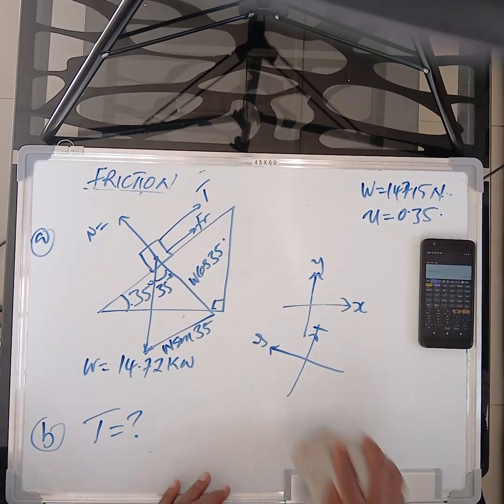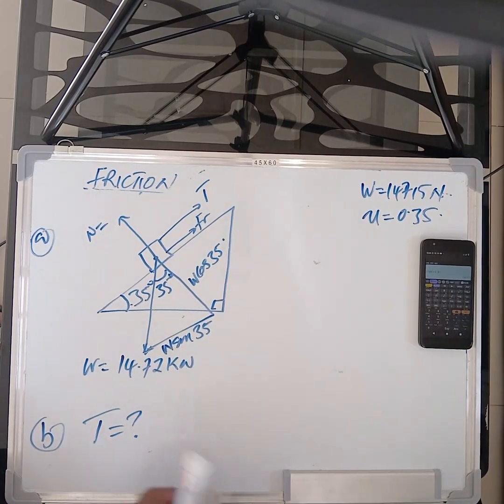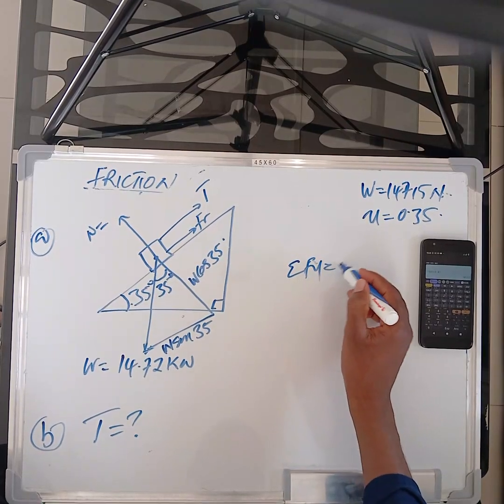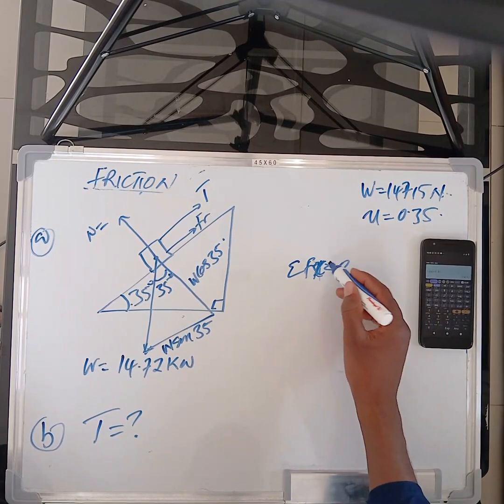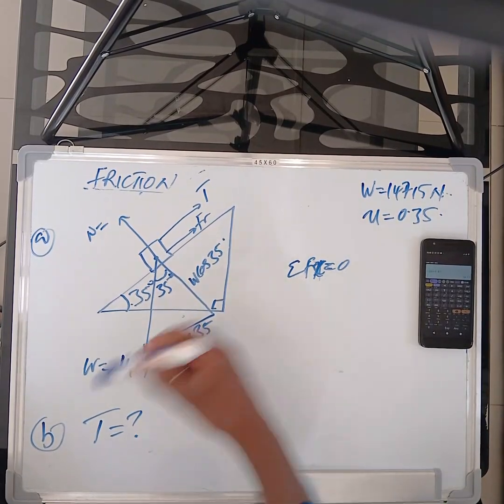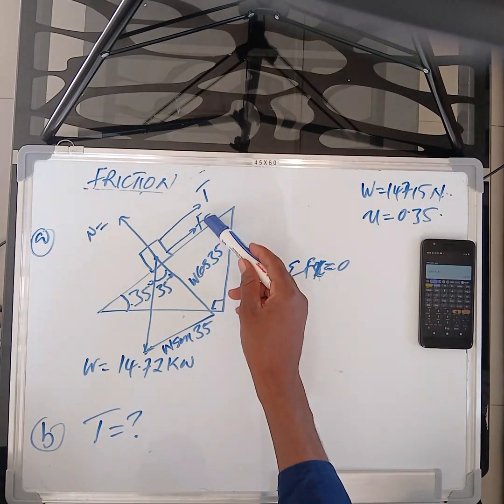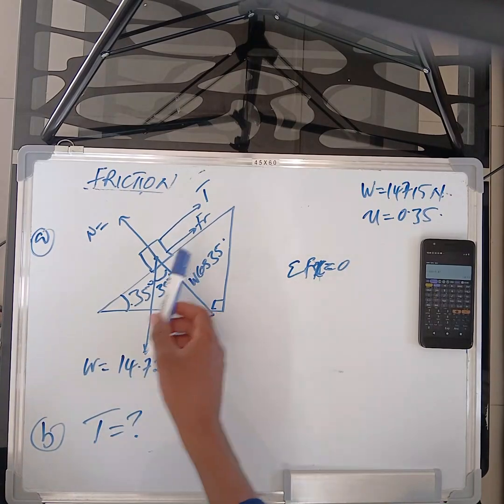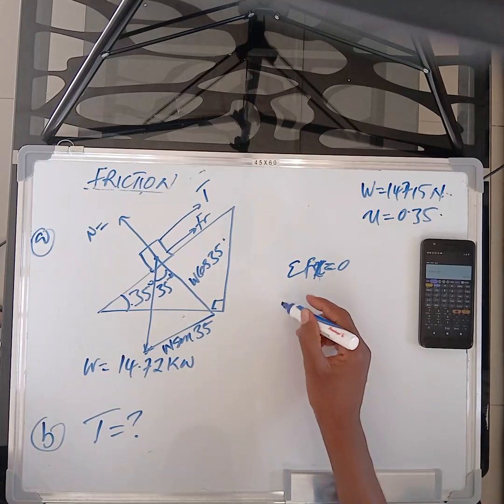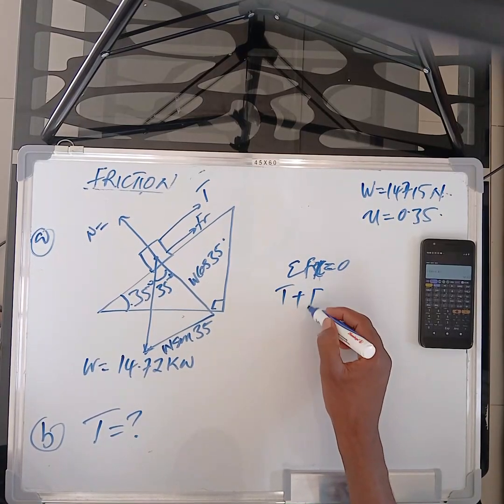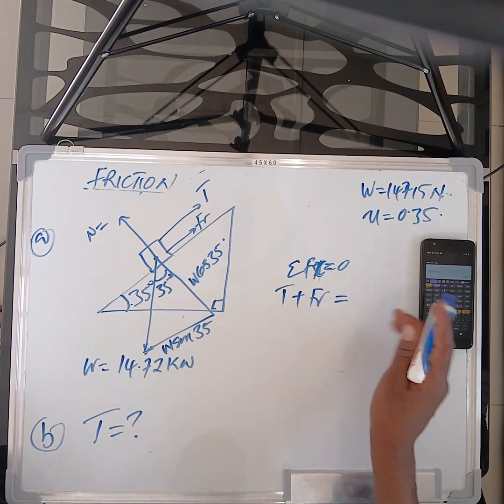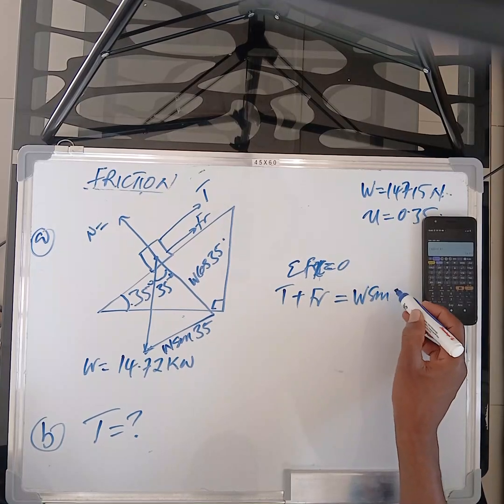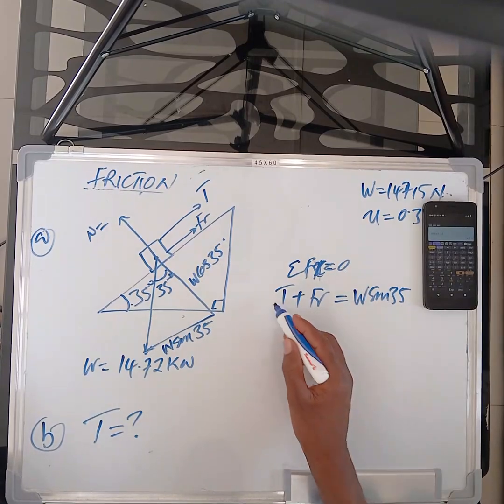So the forces on top is equal to the forces below. Similarly in the X. Now imagine if I have to twist this going like that. It's going to look like this. This is the Y axis. This is the X axis, which is exactly what we have there. So all you can do is simply, that's the short cut way, say the summation of forces in the X should be equal to zero because the motion is in the X.